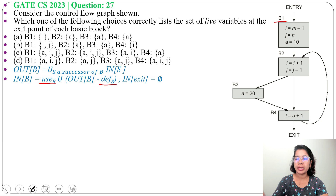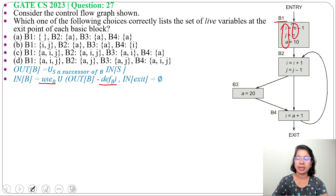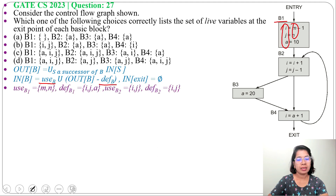In block B1, it uses m and n. So use(B1) will be {m, n} and def(B1) will be {i, j, a} — the variables it defines are i, j, a, and it uses m and n.